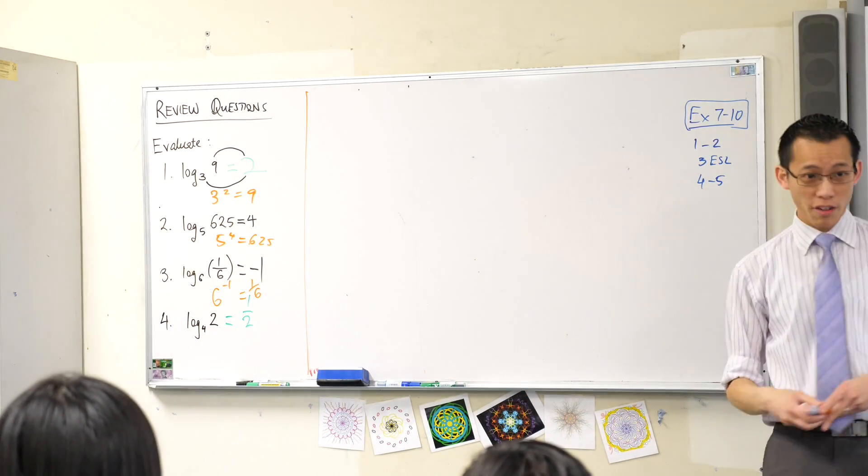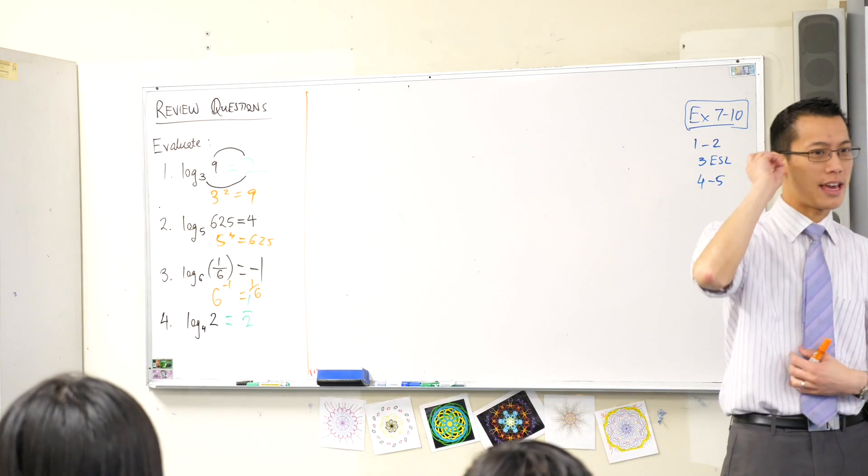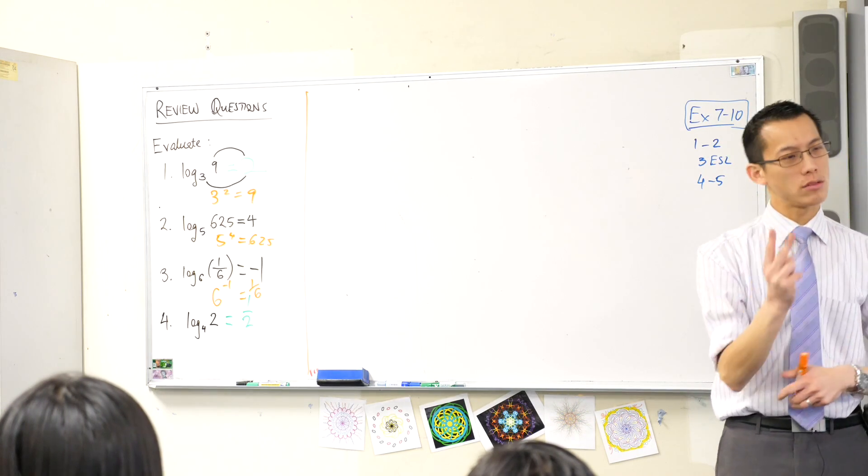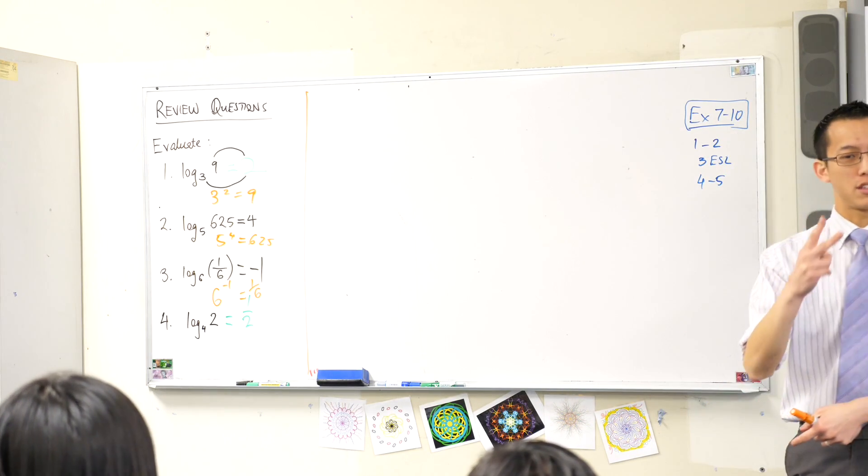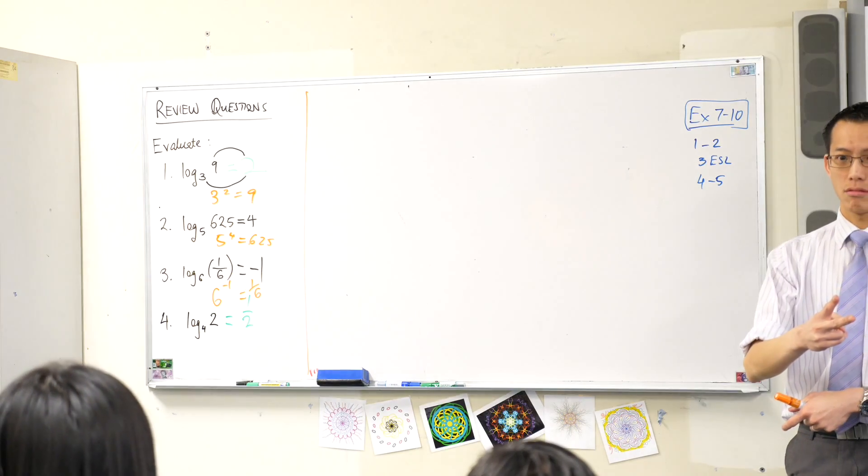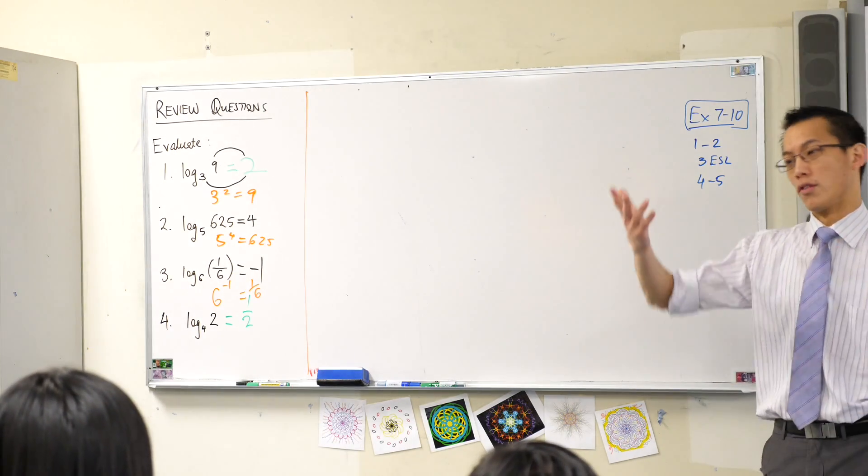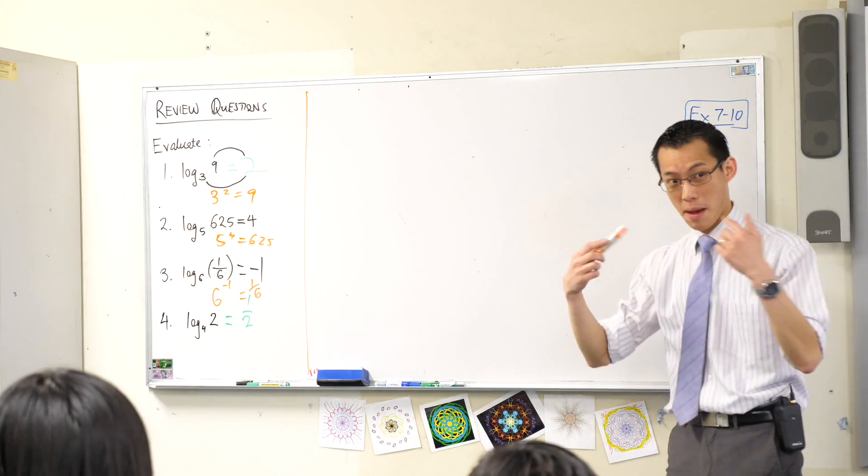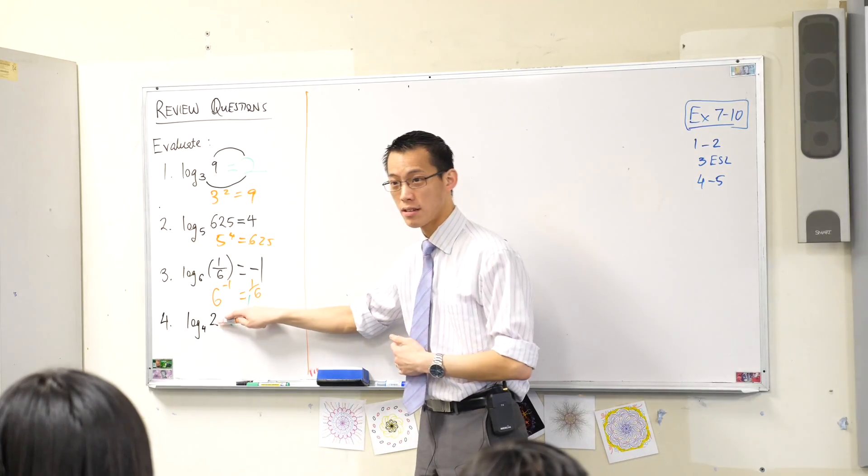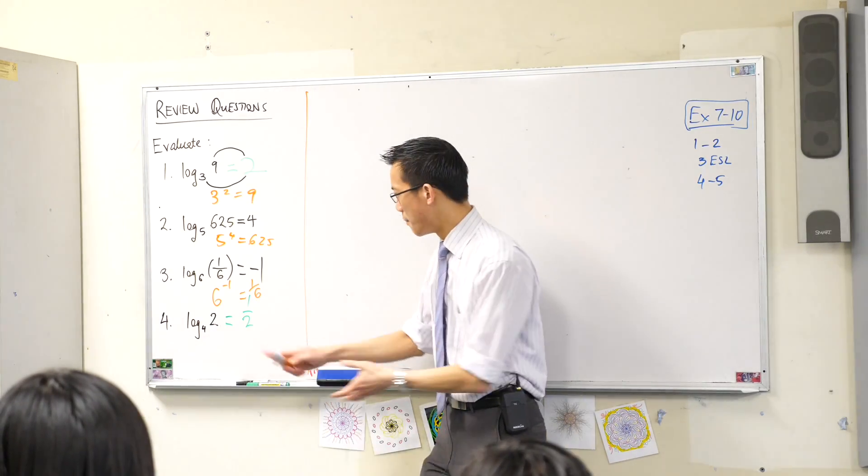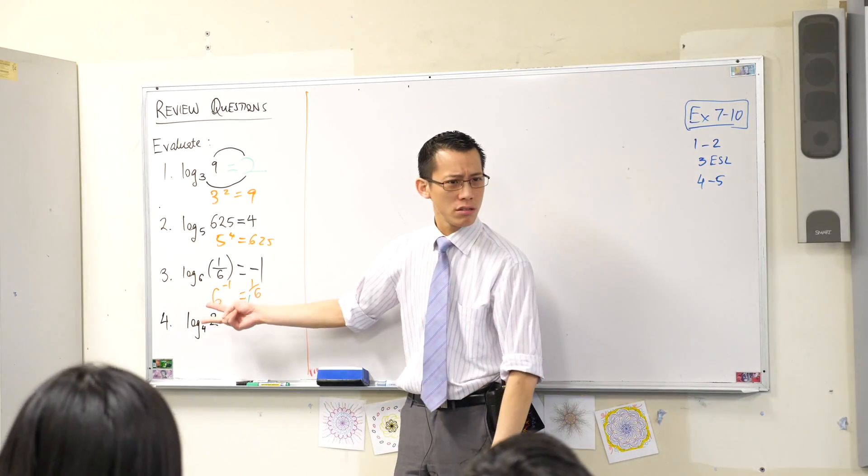Now the last one is sneaky. A lot of people will see that and they'll say the answer is 2. Why do you think someone might look at that and think the answer is 2? 4 divided by 2 is 2. Or thinking about powers, 2 squared, squared is 4. But do you see it's in the wrong direction?